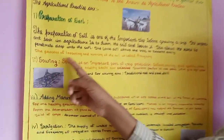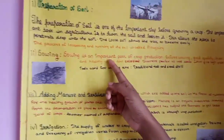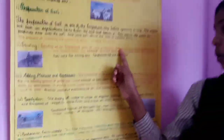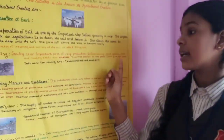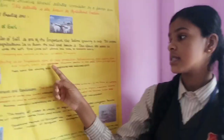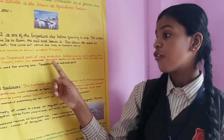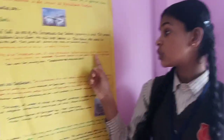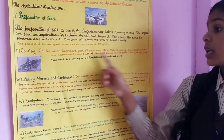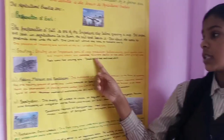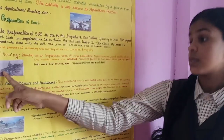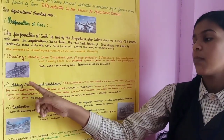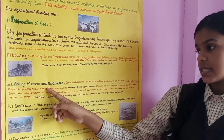The second one is sowing. Sowing is an important part of crop production. Before sowing, good quality, clean, and healthy seeds are selected. Farmers prefer to use seed drills. The tools used for sowing are the traditional method and seed drill.